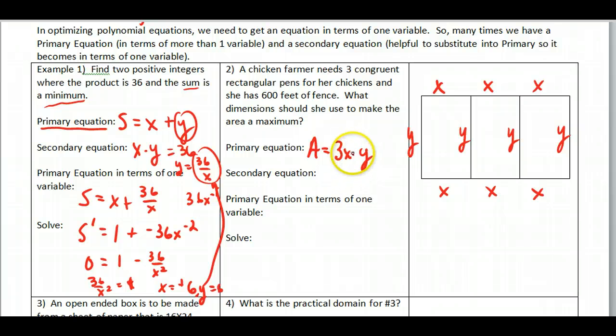Now our secondary equation is the thing that relates x and y together again. Well we use this idea of the total fencing being 600 feet. So I'm going to take 6x and I'm going to add in 4y and that's going to be equal to 600.